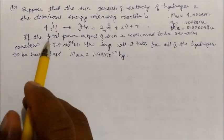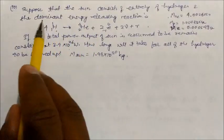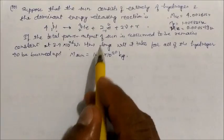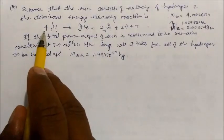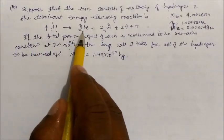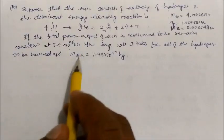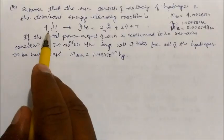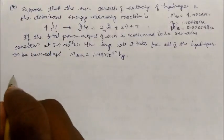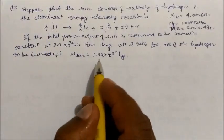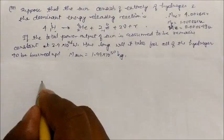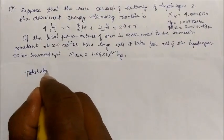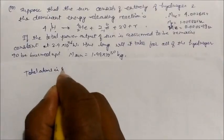To solve this, we find the total number of hydrogen atoms in the sun. Using the sun's known mass, we can calculate the total number of atoms. For every 4 hydrogen atoms consumed, one helium is produced. First let us calculate the energy released per 4 atoms.